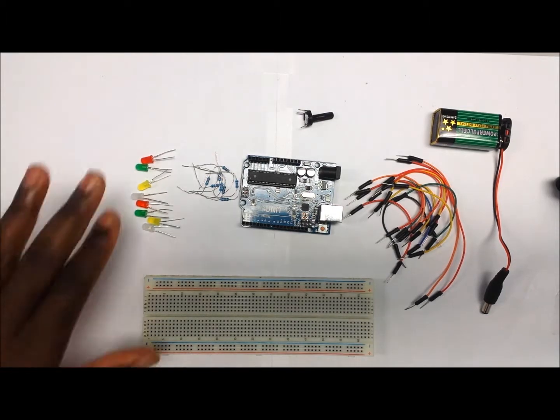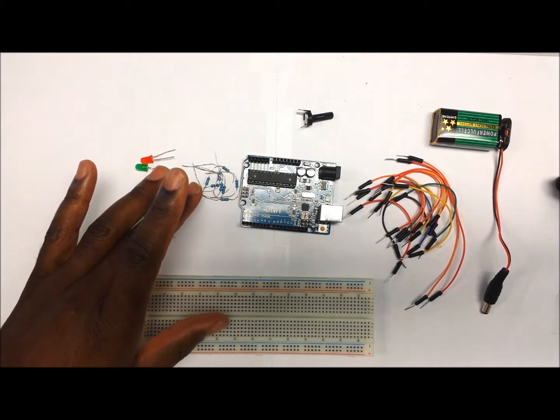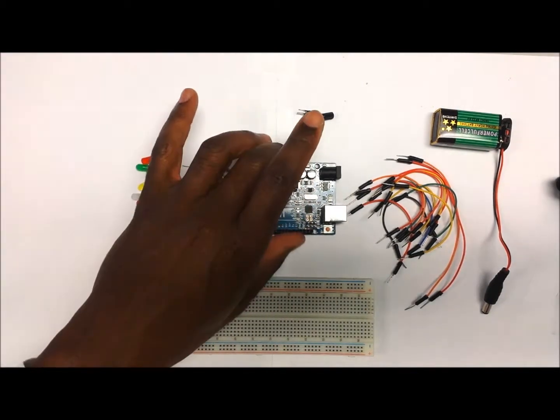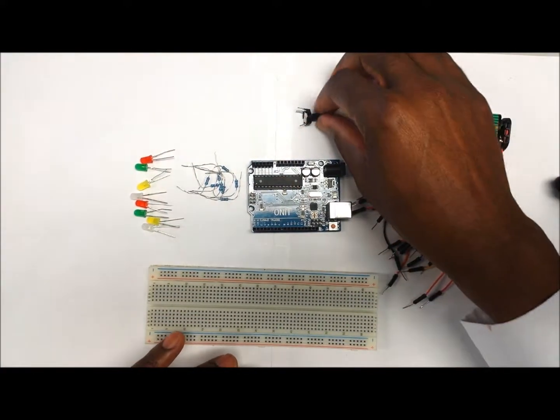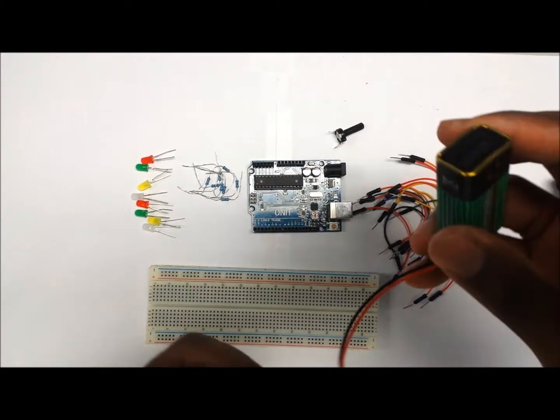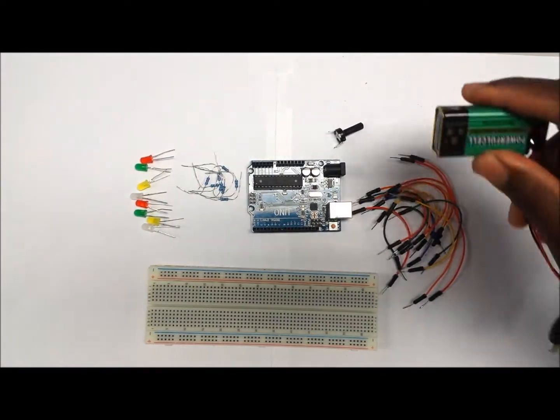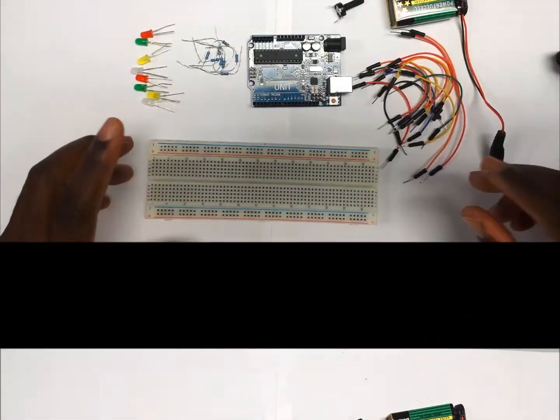What we need for this project are 8 LEDs, 8 resistors, these are 330 ohm resistors, an Arduino, a breadboard, a couple of jumper wires, a 10k potential meter and some source of power. You can use a computer if you don't have a 9 volt battery with a adapter.